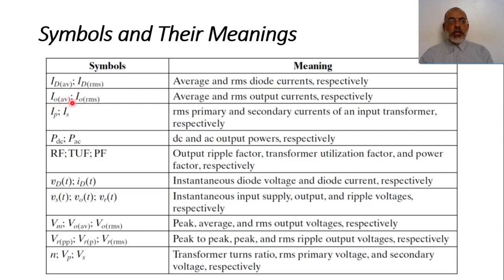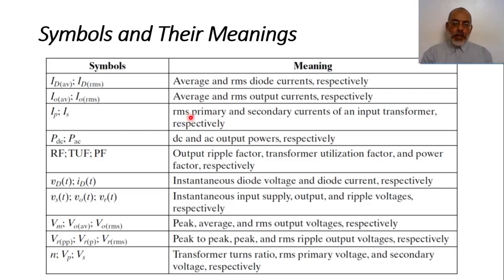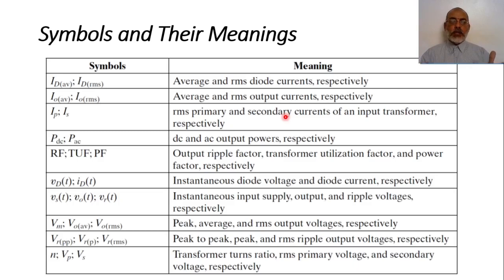IO average and IO root mean squared are the average output current and the root mean squared output current. Ip and Is are the root mean squared values for the primary and secondary current of the input transformer. So Ip is the root mean squared of the primary and Is is the root mean squared of the secondary.